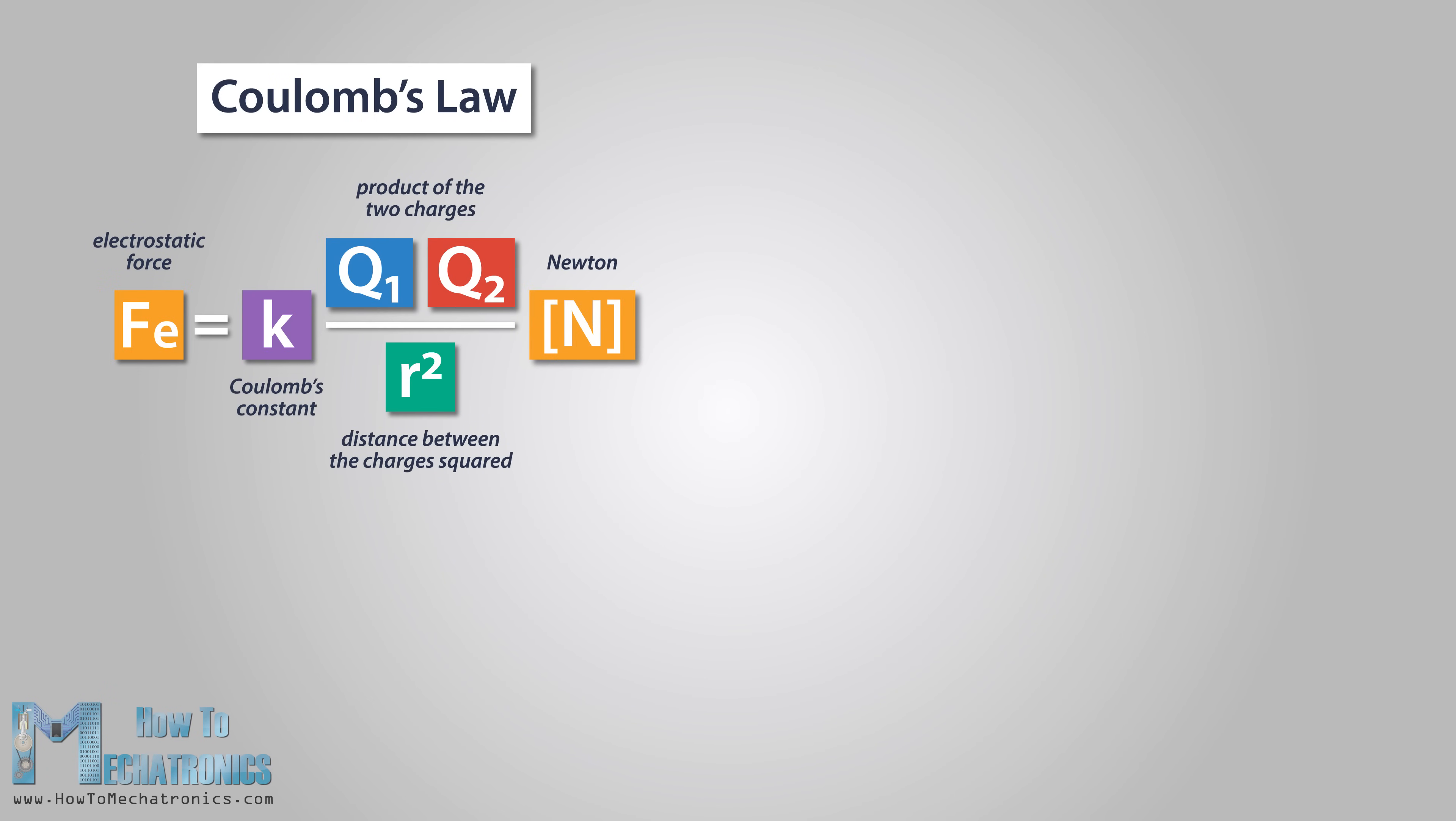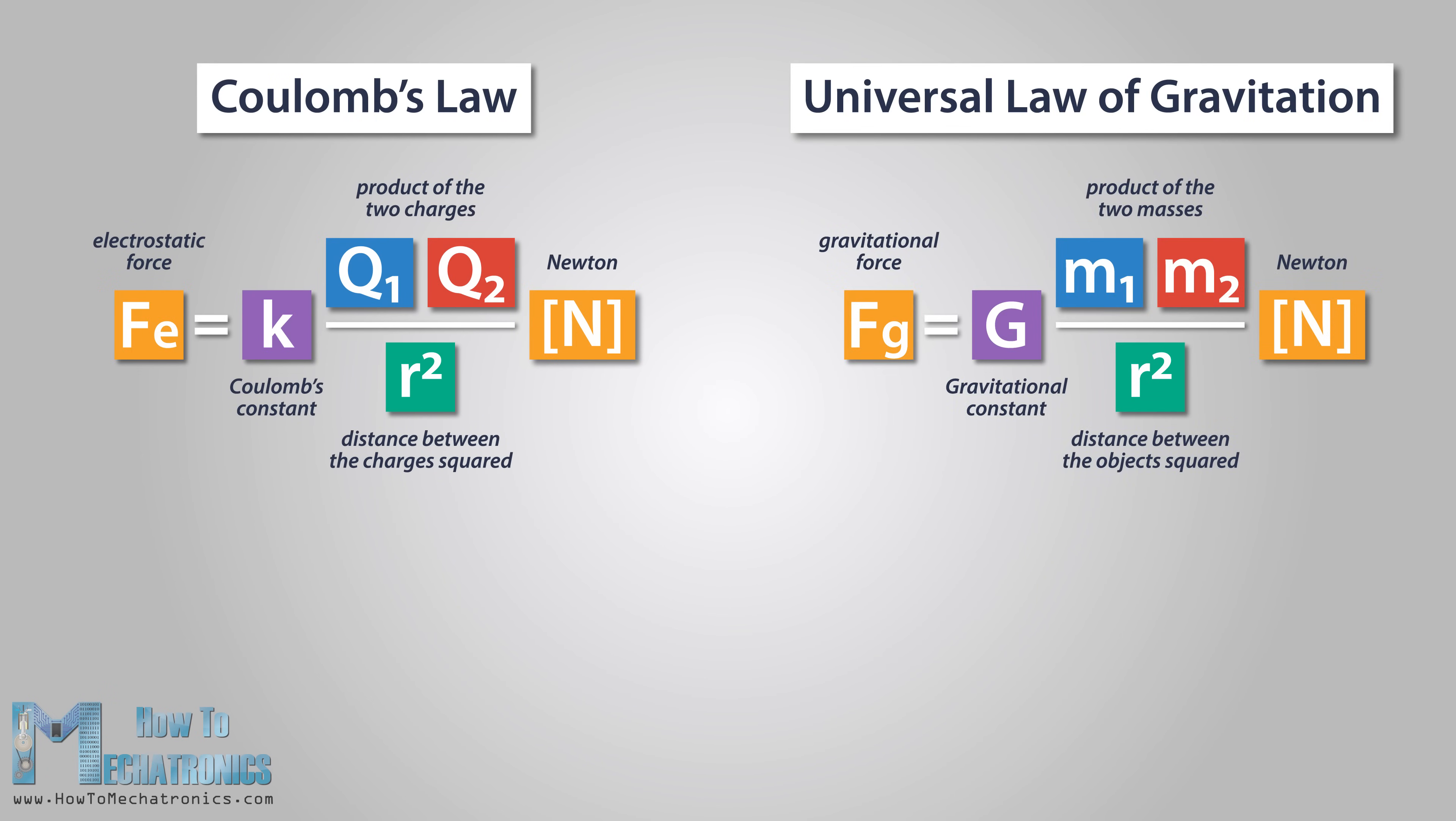If we compare Coulomb's law to the universal law of gravitation, we can notice that they have some similarities, but they work in completely different ways. The electric force is much stronger than gravity. From the equations, we can notice that they have different proportionality constants. In the equation for gravity, we are using mass to find the force, but here we are using charge to find the force.